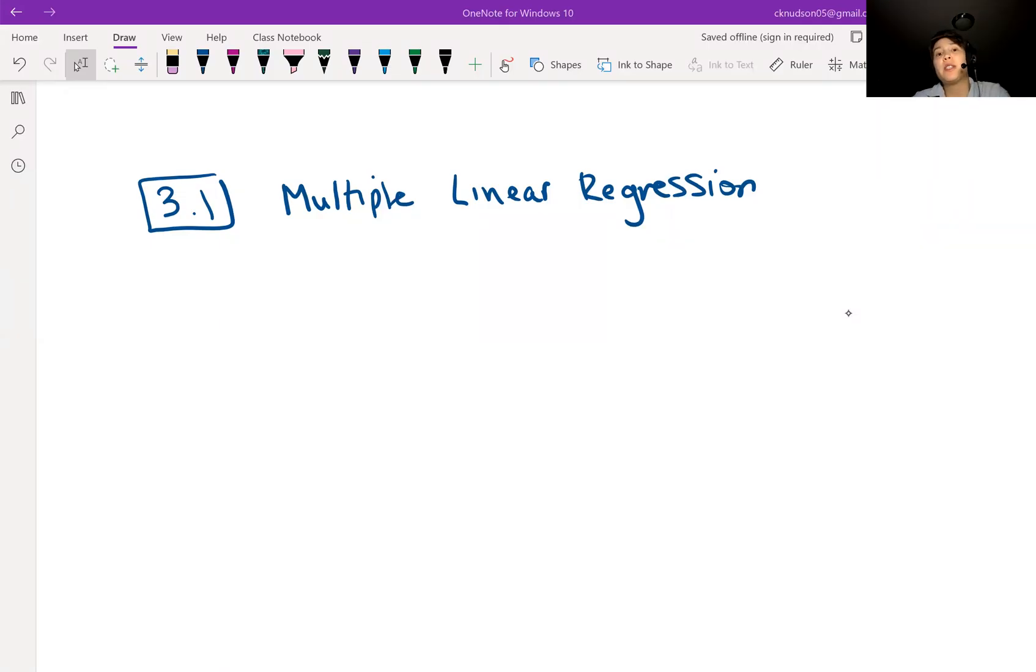In this video, we move from simple linear regression into multiple linear regression. The basic idea is that instead of having one predictor, we're going to have more than one predictor. Previously we just had one single predictor x, and now we are going to have more than one predictor. We're going to have x1, x2 through xk, so we have k predictors.